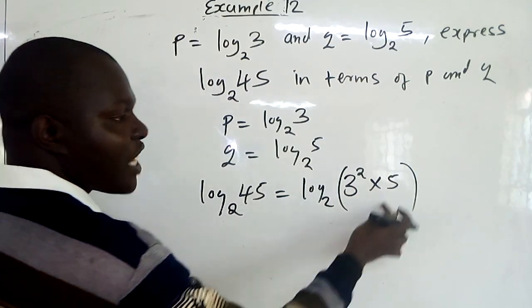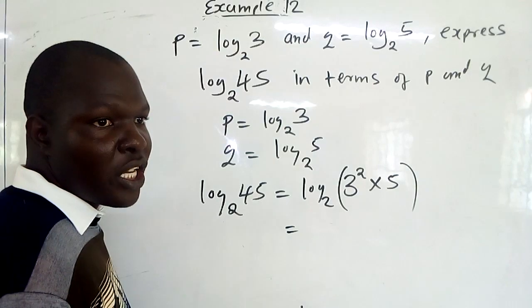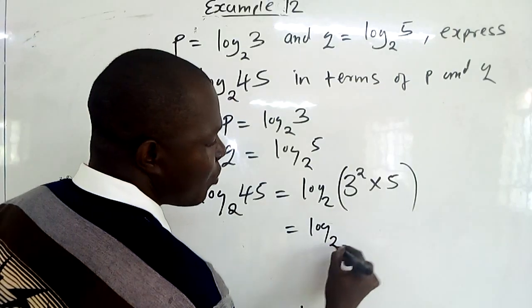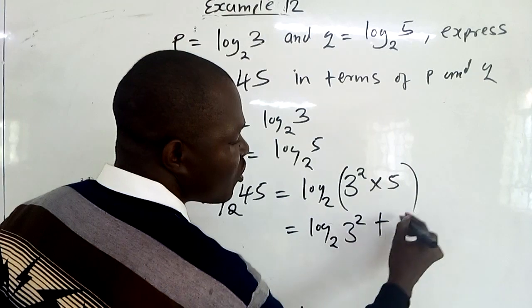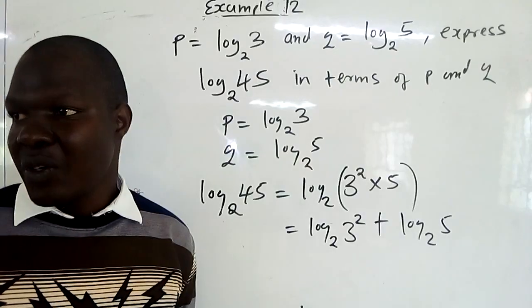So from there, when you take the log inside, multiplication changes to addition. So from there, we now have log base 2 of 3 squared; multiplication changes to addition with log base 2 of 5.